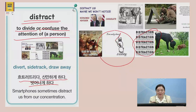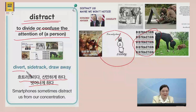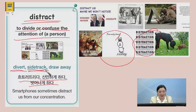So basically, if you're easily distracted, 집중하기 힘든 거예요. So, distracted랑 비슷한 말은 divert — 벗어나게 하다. Side track — 산만하게 하다.